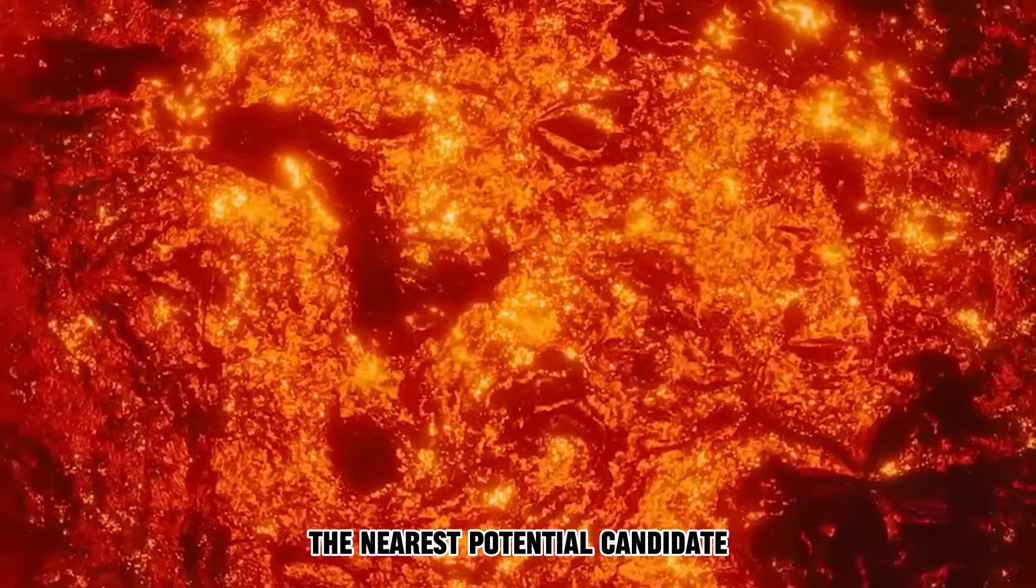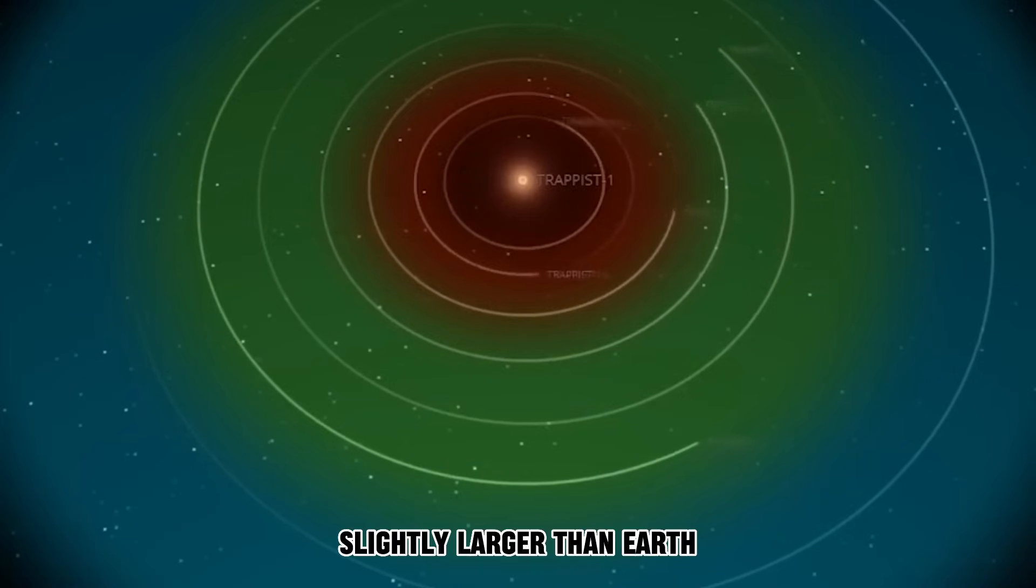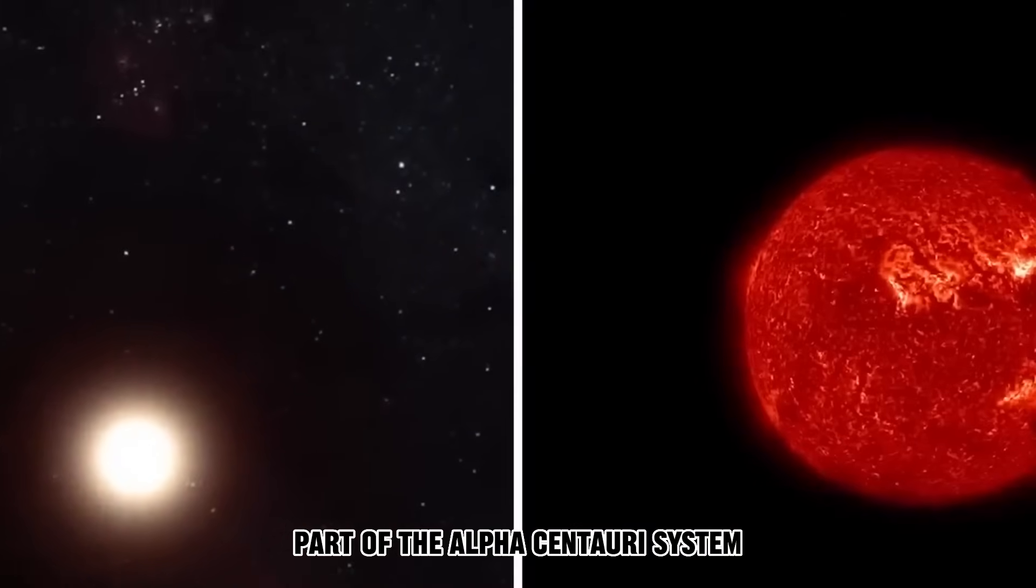The nearest potential candidate, Proxima Centauri b, is a super-Earth just 4.2 light-years away. Slightly larger than Earth, it orbits Proxima Centauri, part of the Alpha Centauri system.